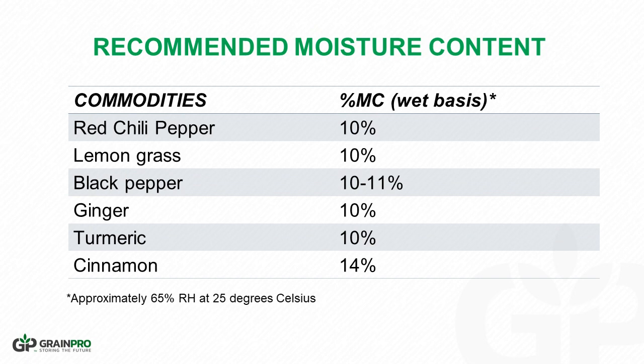Here is a list of recommended moisture contents for some spices, equivalent to 65% RH at 25 degrees Celsius: red chili pepper 10%, lemongrass 10%, black pepper 10–11%, ginger 10%, turmeric 10%, and cinnamon 14%. The spices must be dried up to the recommended maximum moisture content to ensure safe storage. When the prevailing temperature is much higher, adjustments must be made to preserve the quality of spices during storage.